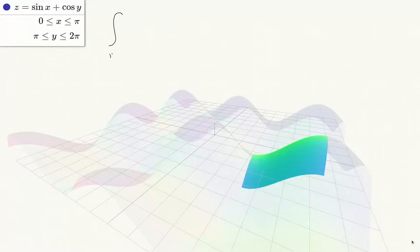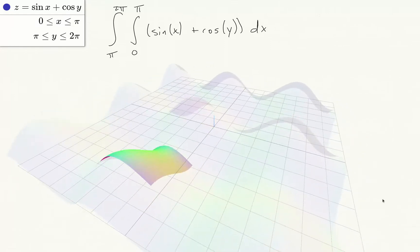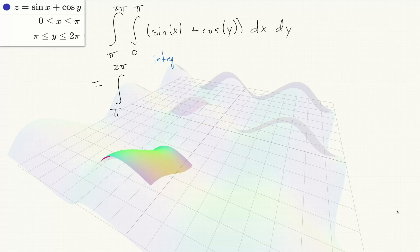So for our first example, let's integrate from π to 2π and from 0 to π, sine of x plus cos of y, dx dy. First, we'll integrate in the x variable, so this stays the same, and we integrate treating y as a constant.